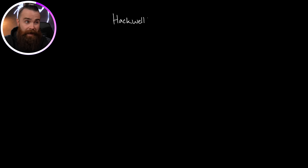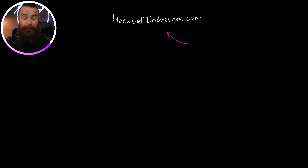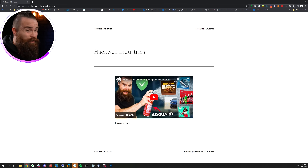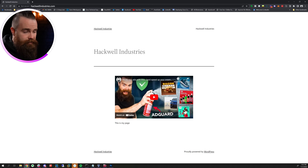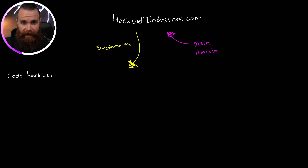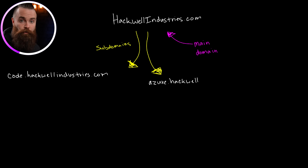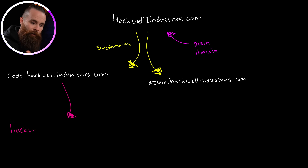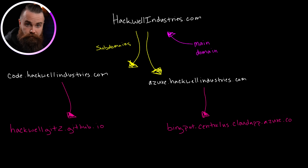Here's how this is going to work. I've got my website, hackwellindustries.com. This is my main domain, my route, and also super professional. Don't be jealous, but we can also have subdomains like code.hackwellindustries.com or azure.hackwellindustries.com. And these will often point to third-party services like GitHub or Microsoft Azure.